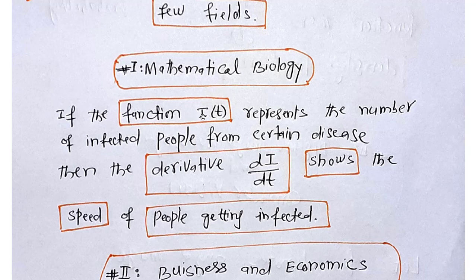In mathematical biology, if the function I(t) represents the number of infected people from a certain disease, then its derivative, denoted di/dt, represents the speed of people getting infected. So the derivative serves as a speedometer — it tells about the rate at which people are getting infected.